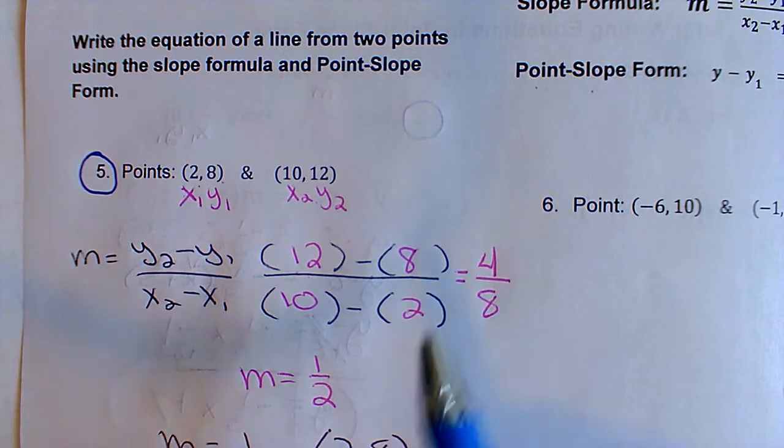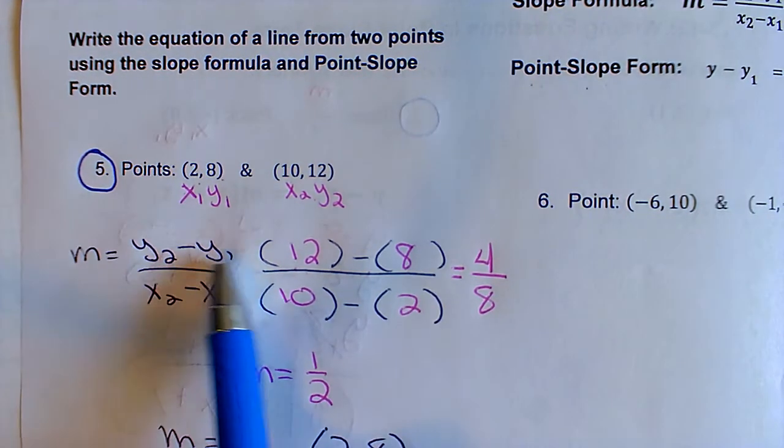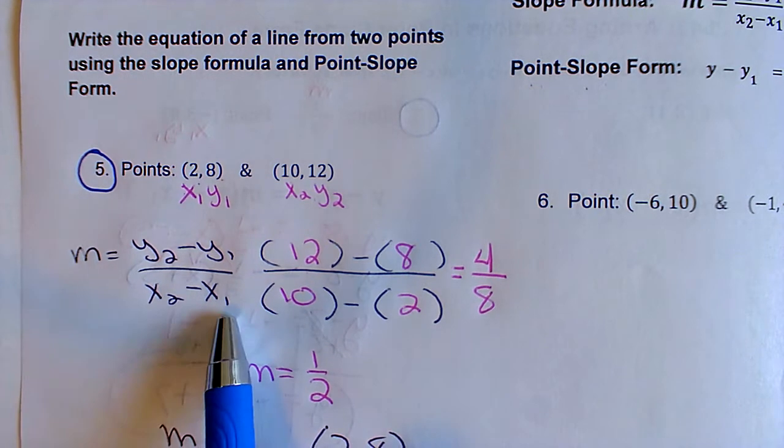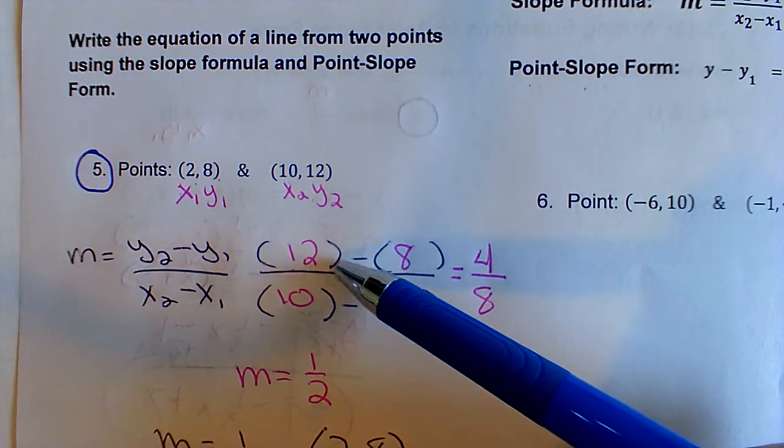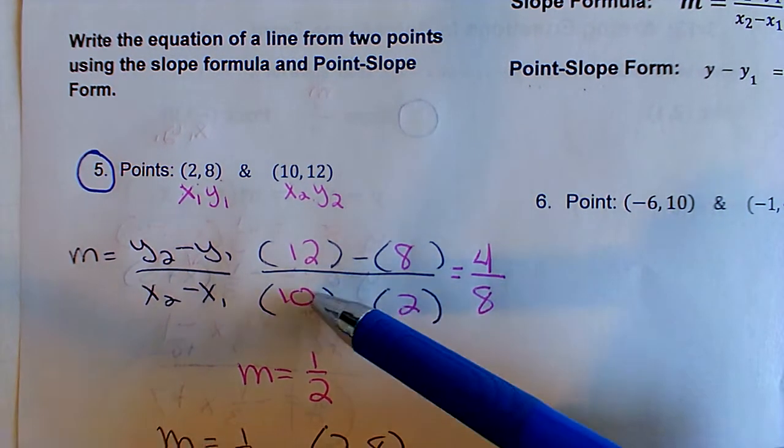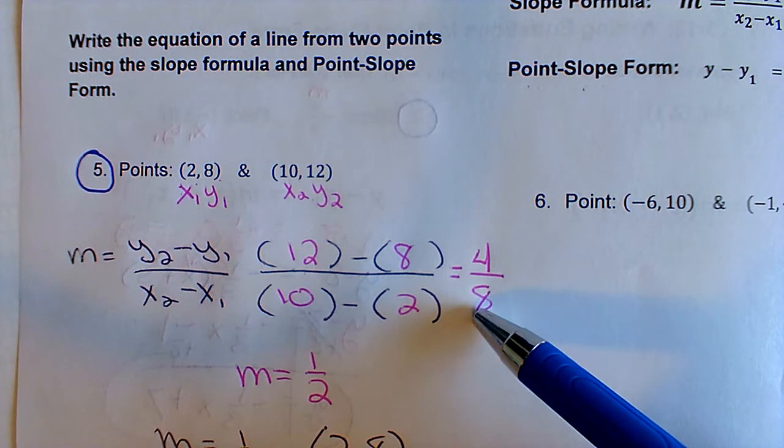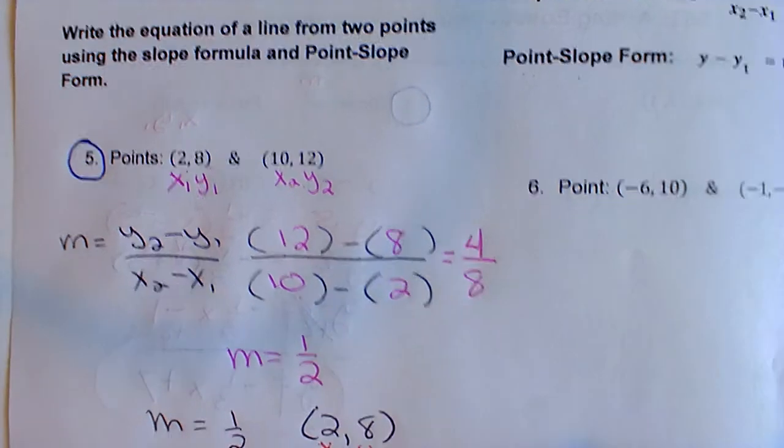So for the slope formula, it is on your paper, y₂ minus y₁ over x₂ minus x₁. And if I plug in my numbers, just like I have it right here, I end up with 4 over 8, which is the same thing as 1/2 when you reduce it.